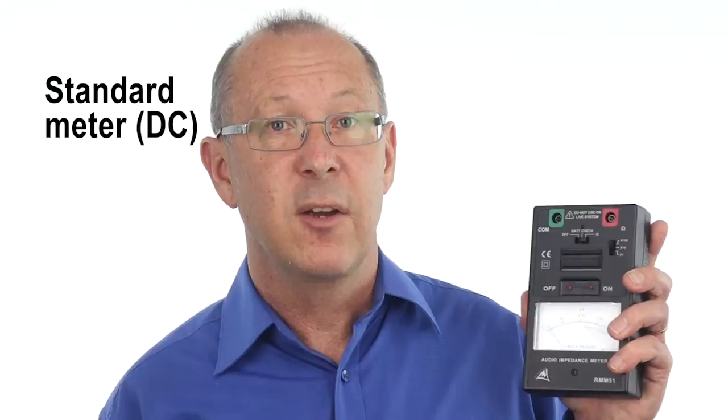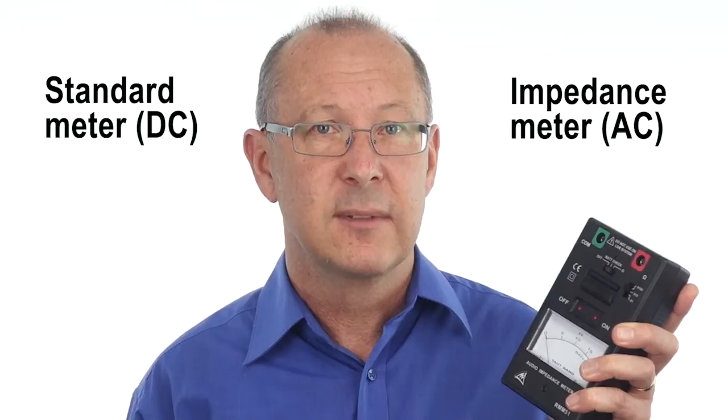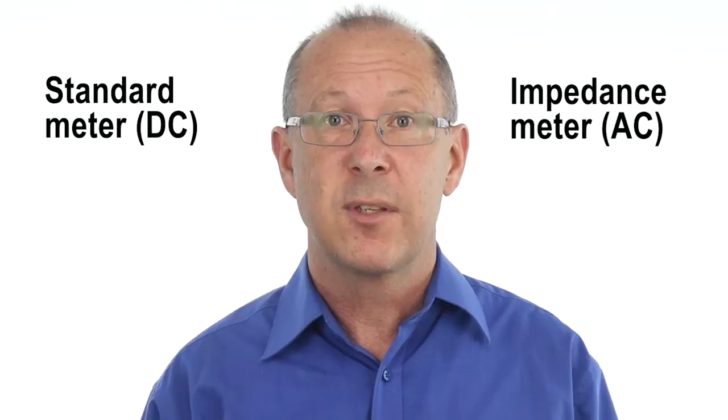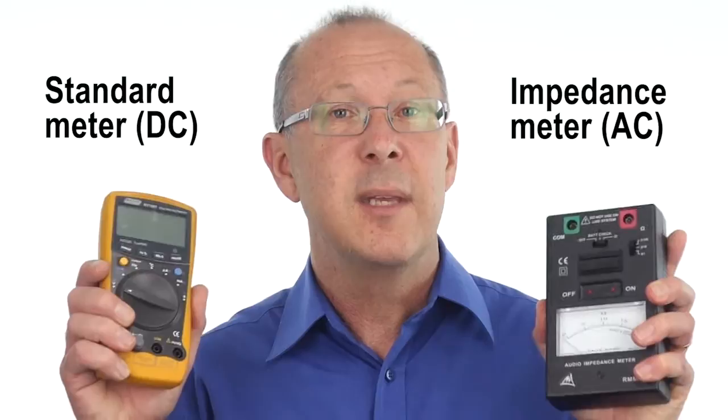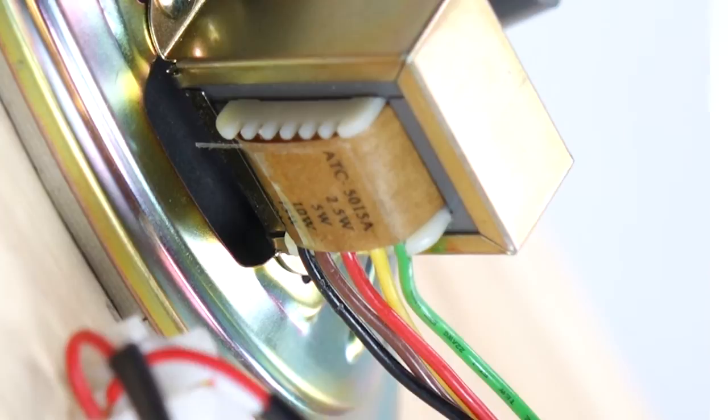An impedance meter on the other hand tests the circuit with the same conditions as an audio signal by applying an alternating current. With a simple resistive circuit like just a resistor in line, the results between these two meters are going to be exactly the same. But when you introduce speaker coils and transformers into the works, weird things start to happen with the resistance in the circuit, especially when you're applying an alternating current.